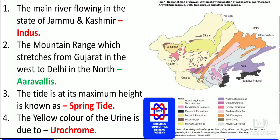The mountain range that stretches from Gujarat in the west up to Delhi in the north is the Aravalli. The Aravalli ranges are also found in Rajasthan, from where the Luni river — a salt landlocked river — flows.